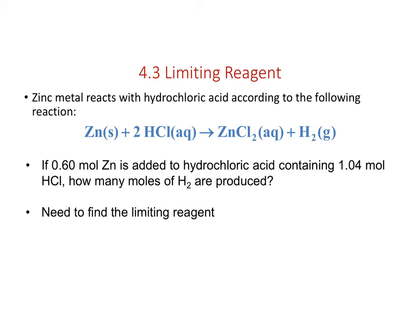The same applies to chemical reactions: we may have one reagent in excess and one that runs out first. Zinc metal reacts with HCl to produce zinc chloride and hydrogen gas. If 0.6 moles of zinc is added to a solution containing 1.04 moles of HCl, how many moles of hydrogen are produced? We need to find the limiting reagent.